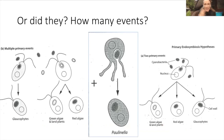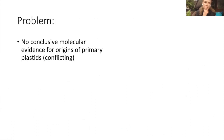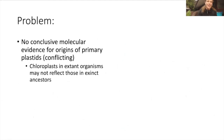Actually, it's not just two events or one event. We know that Paulinella, which is another eukaryote, has a chloroplast that's different from all other organisms on the planet. Its ancestors ingested a Prochlorococcus bacterium, and it's clearly different than everything else. So there were at least two events, maybe three or more. The problem is there's no conclusive molecular evidence for the origins of primary plastids - or it's conflicting. The chloroplasts in extant organisms may not reflect those in extinct ancestors at all. There might have been too much horizontal gene transfer for us to know what that original ancestor was like.